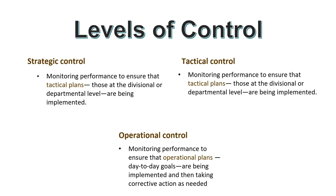Tactical control is monitoring performance to ensure that tactical plans at the divisional or department level are being implemented and taking corrective action as needed. This is done mainly by middle-level managers. Operational control is monitoring performance to ensure that day-to-day operational plans and goals are being implemented, with corrective action taken as needed. Operational control is done at the first level of management.